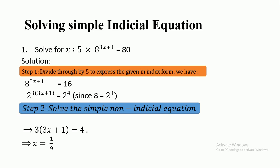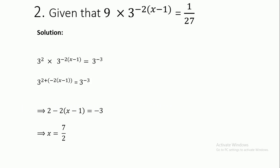Take 3 to the other side: 9x = 1. Divide both sides by 9: x = 1/9. This is how we solve simple indicial equations. The second example is...